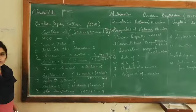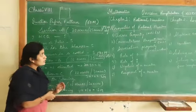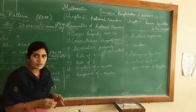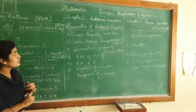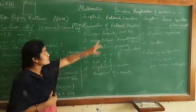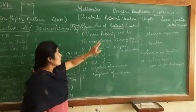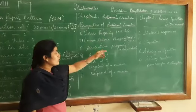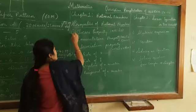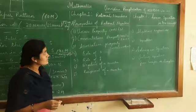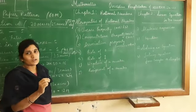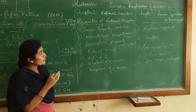Now let us move on to recapitulation of chapter 1: Rational Numbers. We have discussed this in our earlier videos. I would like to brush up the properties of rational numbers: closure property, commutative property, and associative property are the three properties which we have discussed.